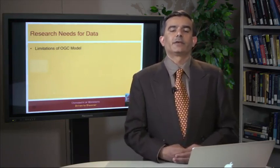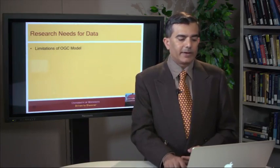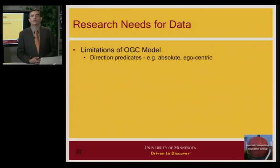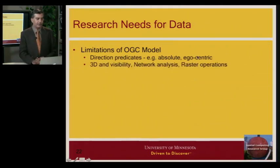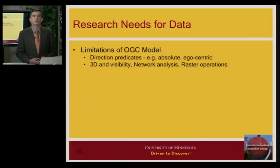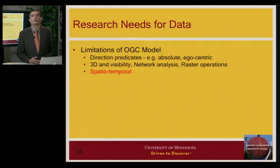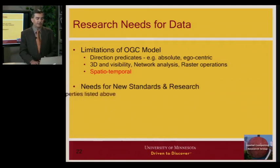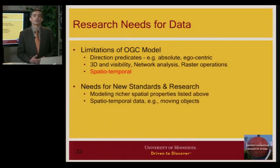To wrap up the discussion of spatial data and feature selection: today there is a simple features model from OGC that takes you quite far, but in the future things will improve. Right now OGC does not model directional predicates, three-dimensional relationships, or visibility relationships — for example, what is visible from a building top or a particular window, given varying elevation. You have to do custom programming, something like computer graphics, for that. Similarly, spatio-temporal data such as GPS trajectories are not well supported in these standards, and new standards and research are emerging to provide more mathematically elegant ways to model this.